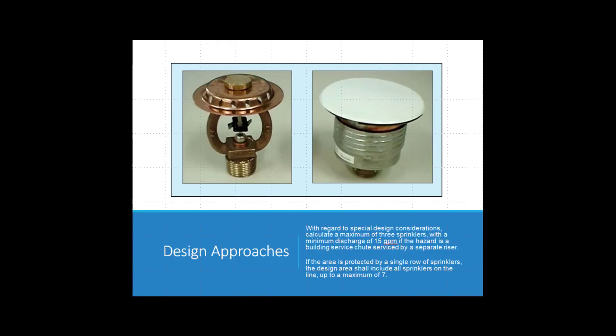You can calculate a maximum of 3 sprinklers with a minimum discharge of 15 gallons per minute if the hazard is a building service chute serviced by a separate riser.